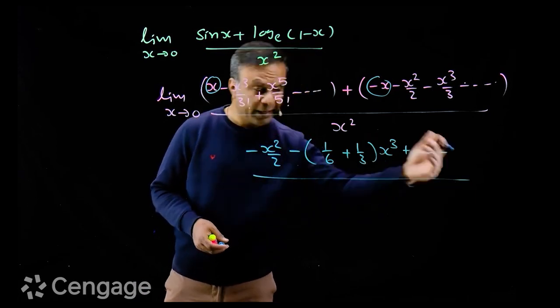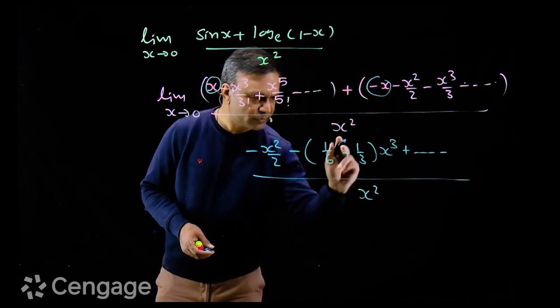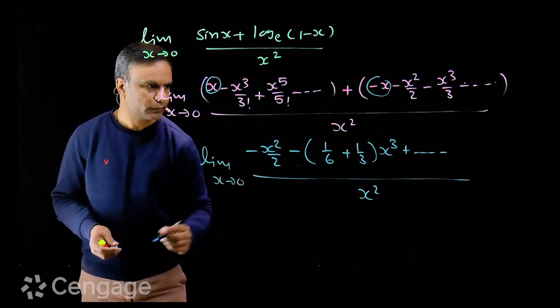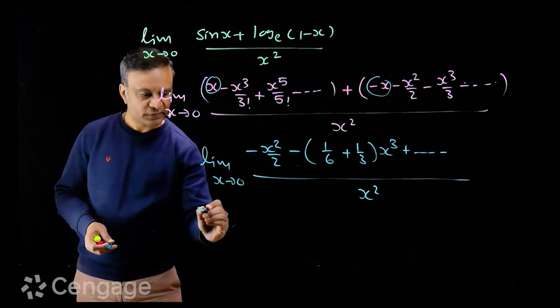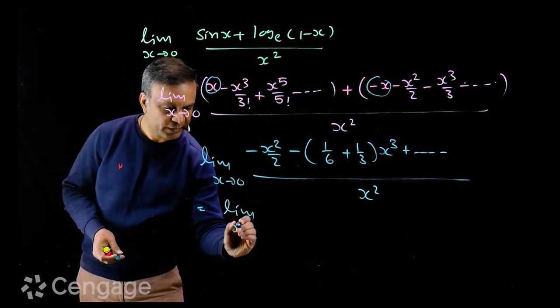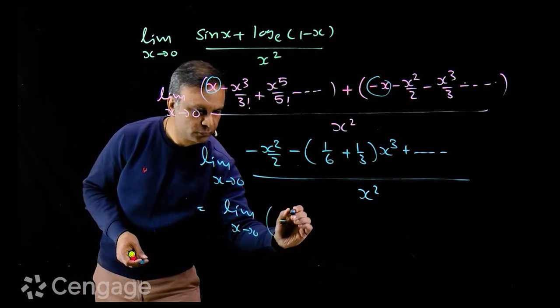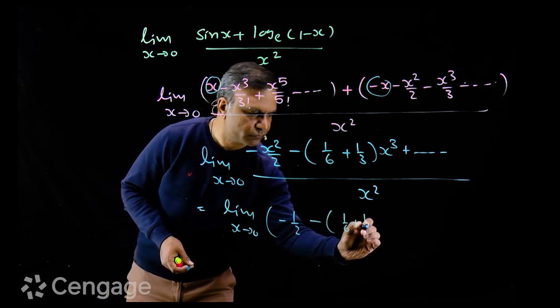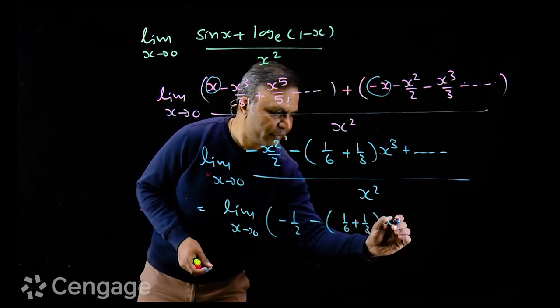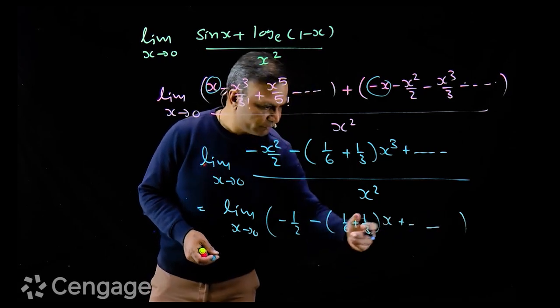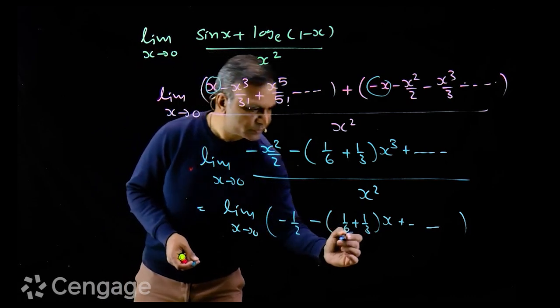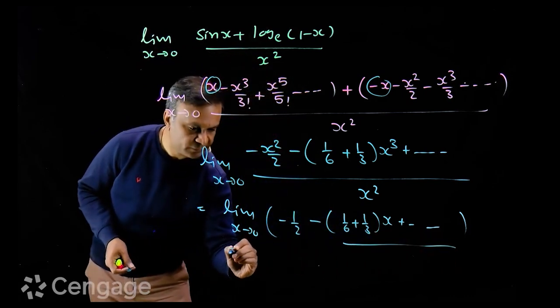This is equal to limit x tends to 0 of minus half minus 1 upon 6 plus 1 upon 3 multiplied by x and so on. We will have higher powers of x here. And when x tends to 0 all these terms tend to 0, so the limiting value will be minus half.